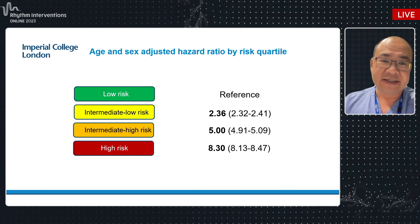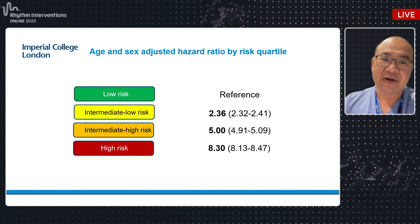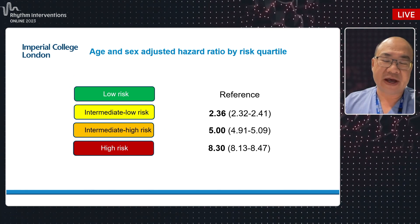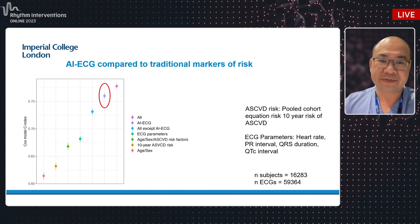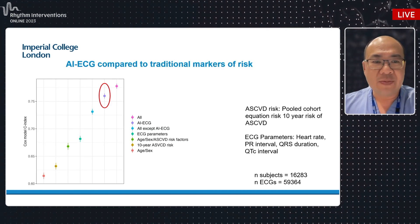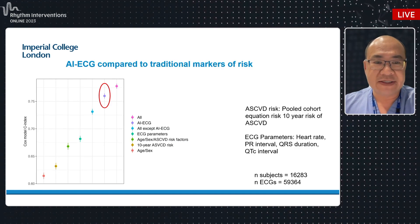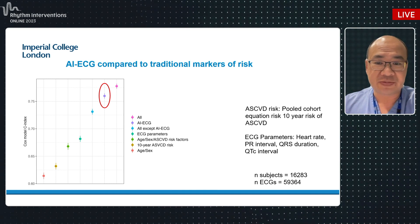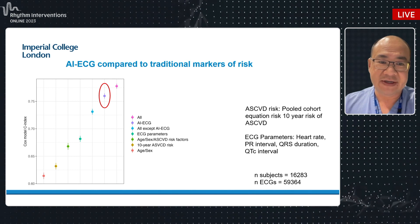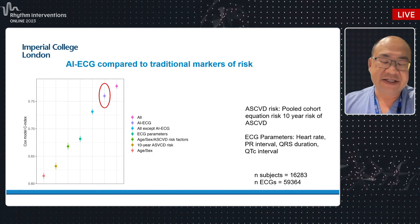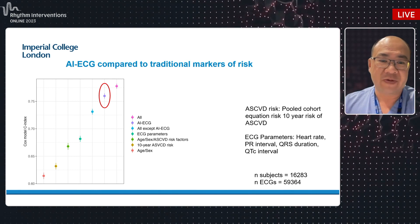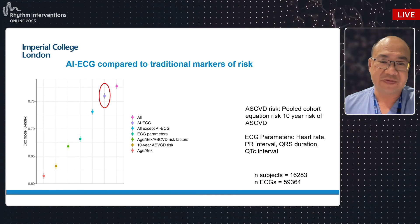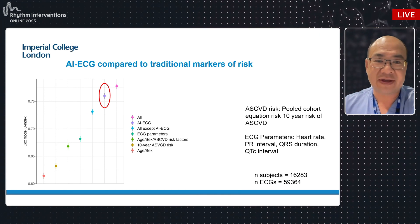The age- and sex-adjusted hazard ratio is about 8.3 for the high-risk group compared to the low-risk group. Comparing to the pooled cohort equation traditionally used to predict ASCVD risk, AI appears to outperform it when adjusted for age and sex. Combining everything together further improves performance.